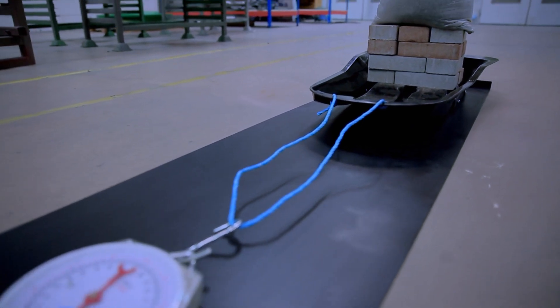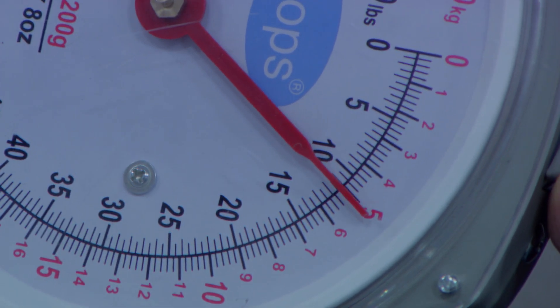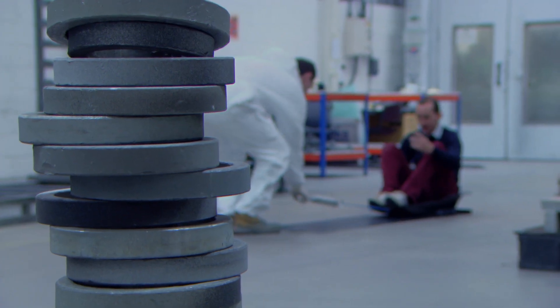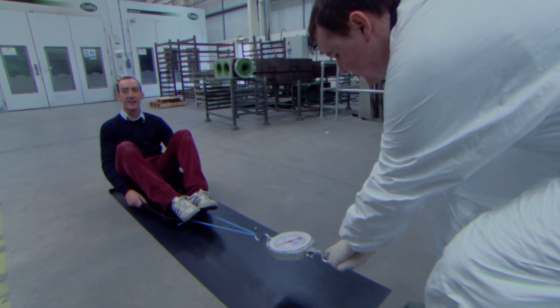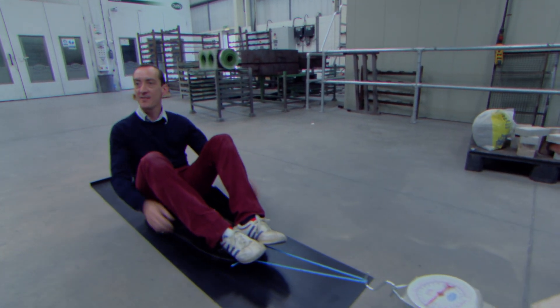The sledge can carry up to 40% more weight when pulled across the PTFE coated sheet, the equivalent of a 5 foot 9 engineer. How much are we seeing? Wow. There you go, 12 kilograms, 120 newtons. How about that?